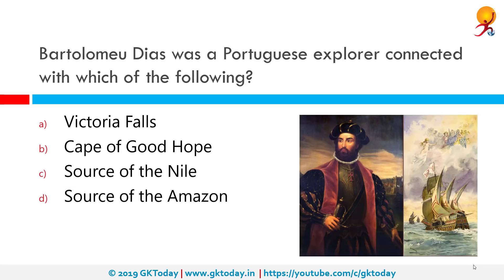Bartolomeu Dias was a Portuguese explorer. He sailed around the southernmost tip of Africa in 1488, the first to do so, setting up the route from Europe to Asia. Dias was the first European during the Age of Discovery to anchor at what is present-day South Africa.